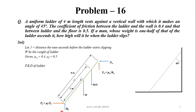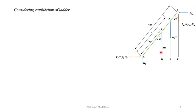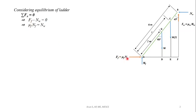The free body diagram is now complete. We consider the equilibrium of this ladder. First equilibrium equation: ΣFx = 0. In the x-direction, FF is towards the right and NW is towards the left, so FF − NW = 0. From that, FF = μf × NF = 0.5 × NF = NW.